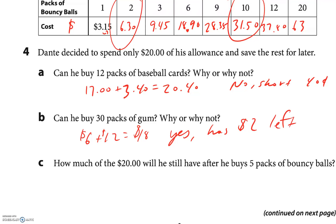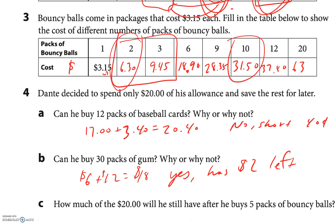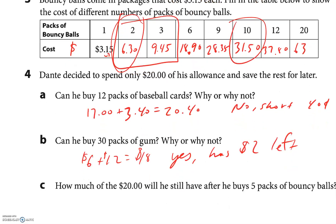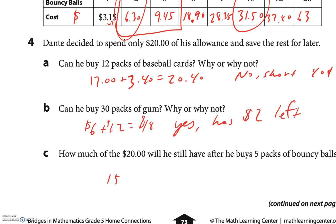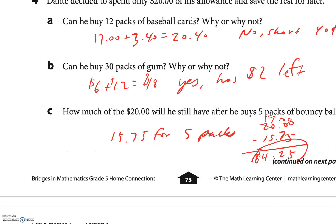How much of the $20 will Dante still have after buying five packs of bouncy balls? I can add the values for two and three: $6.30 plus $9.45 — 6 plus 9 is 15, and 30 plus 45 is 75 cents, so $15.75 for five packs. Then $20.00 minus $15.75: I borrow from the 20, making it 19 and a dollar — a dollar minus 75 cents is 25 cents, and 19 minus 15 is 4. He'll have $4.25 left.